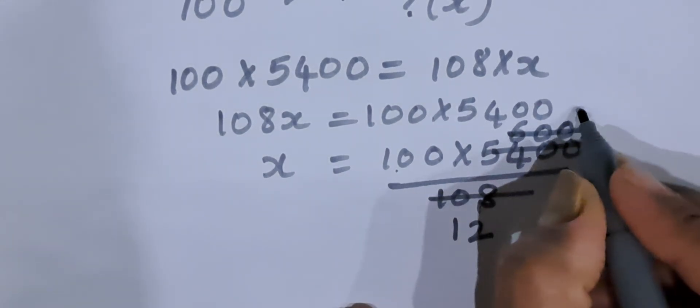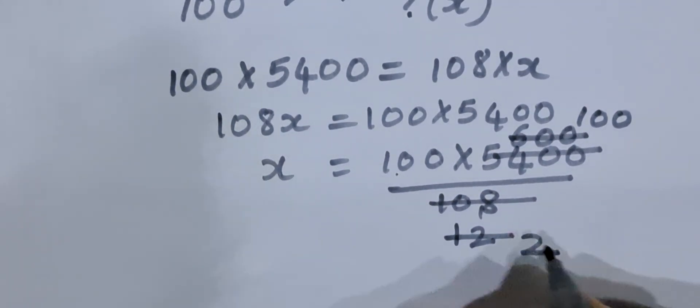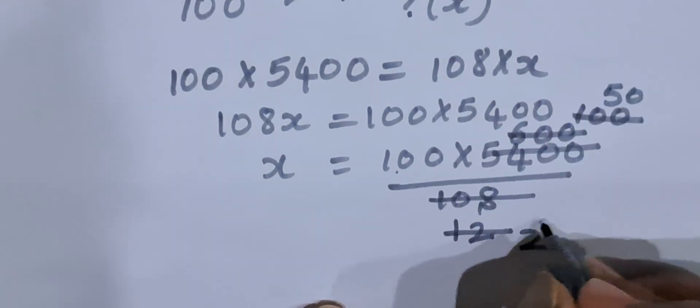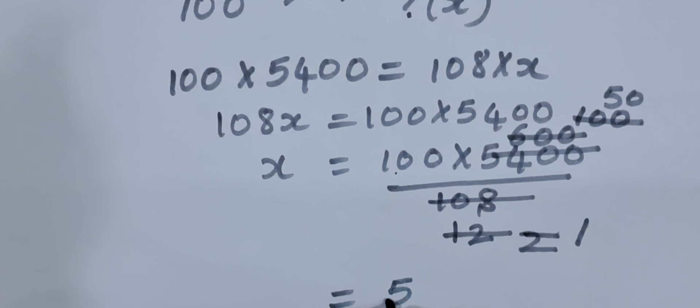Now 600 upon 12, it gets divided by 6. 6 hundreds are 600, 6 twos are 12, 100 upon 2, it becomes 50. So 50 times 100 is 5,000.